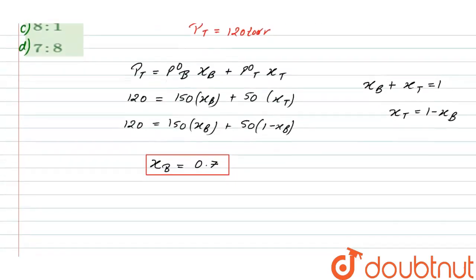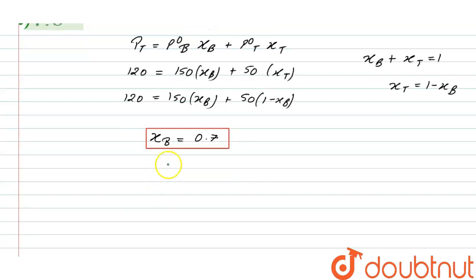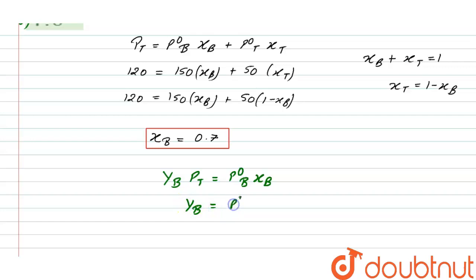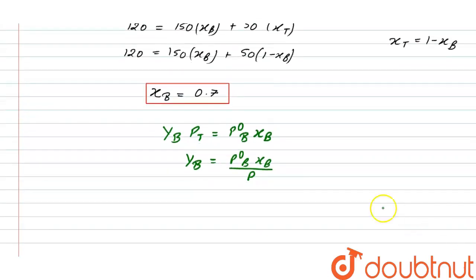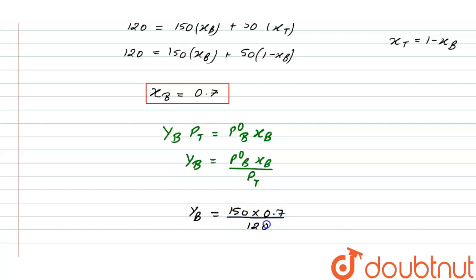The question asks for the mole fraction in the vapor phase. There is a relation between the vapor phase and liquid phase: y_B · P_T = P⁰_B · x_B. From this, y_B = P⁰_B · x_B / P_T. Substituting: y_B = 150 × 0.7 / 120.